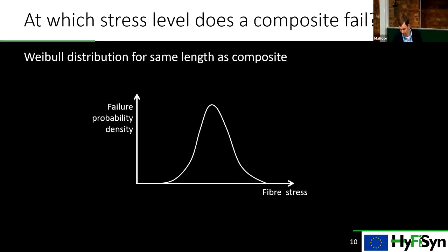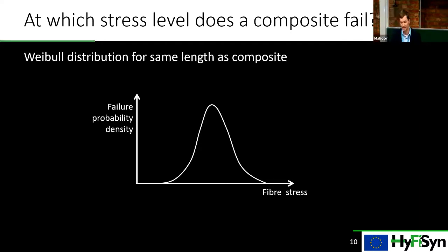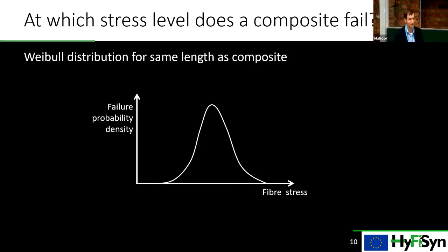I want to make the point about the importance of the Weibull distribution because it will come back a couple of times. I'm going to ask you a question: at which stress level does a composite fail? This Weibull distribution is set up for the same length as the composite — it will shift if you take it for a different length. So, will it fail somewhere near the middle, towards the lower tail, or towards the upper tail?